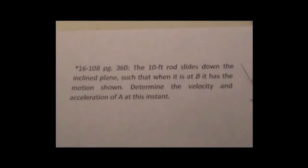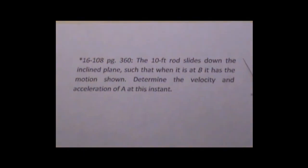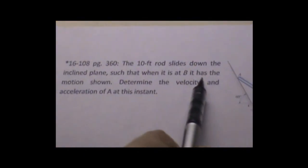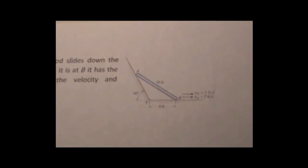This is Dynamics book, Hibbler book, Engineering Mechanics Dynamics, 11th edition, problem number 16-108. It's on page 360. It says the 10-foot rod slides down the inclined plane such that when it is at B, it has the motion shown. The motion shown here made it bigger for you guys to see.